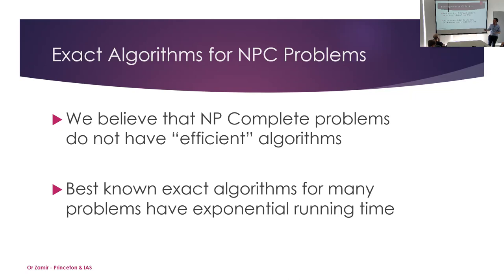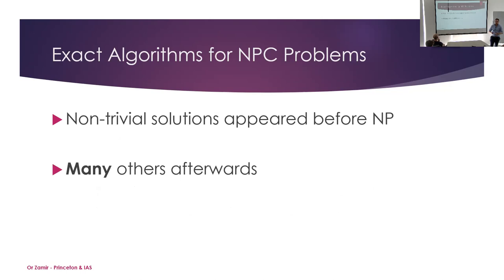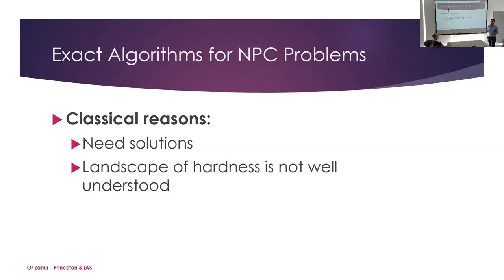Let's do a short detour on exact algorithms for NP-complete problems. We don't believe these problems should have efficient solutions — most of us believe P ≠ NP, so we shouldn't have efficient algorithms, and for many problems the best algorithms should be exponential. Nevertheless, for most interesting NP-complete problems we still have non-trivial algorithms that do better than trivial enumeration. We knew this long before defining NP: in the early 60s, Held and Karp had an algorithm for TSP running in exponential time in the number of vertices, not n factorial.